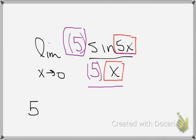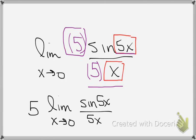So now I have a problem that looks like 5 times the limit as x goes to 0 of sine of 5x divided by 5x. And so this is going to be the 5 out front, which gives me a 5. This limit right here we know goes to 1. So that's 5 times 1, which equals 5.